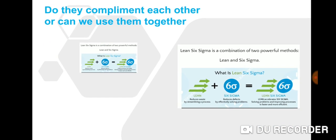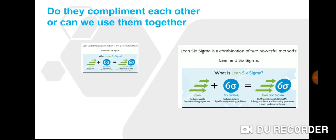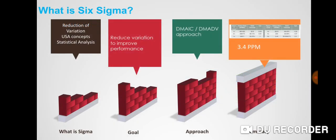Let's talk about what is Six Sigma. Six Sigma: reduction of variation, because the variation creates a problem. That's the reason actually we need to arrest the variation. It's a US technique and it's full of statistical analysis. What's the goal of Six Sigma? The goal of Six Sigma is to reduce the variation to improve the performance.